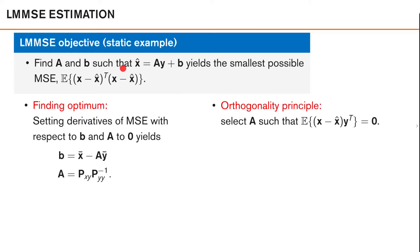The key here is that we restrict our estimator to be a linear or affine function of the data. Why is this important? In many situations it is quite difficult to compute the posterior density, and even if we are able to do so, we still need to compute the posterior mean, which is quite complex in many general settings. However, in many cases we can still find the LMMSE estimator, which has some nice properties.